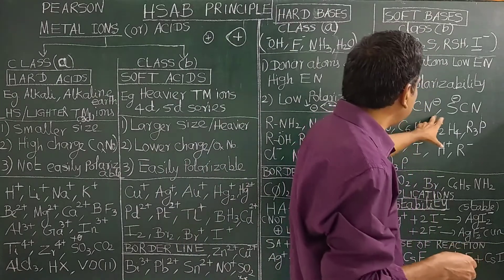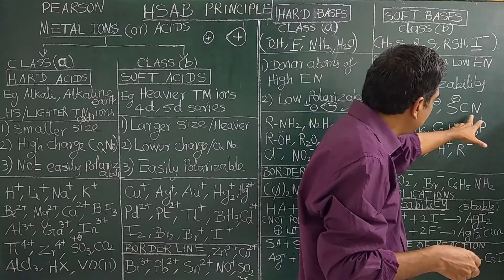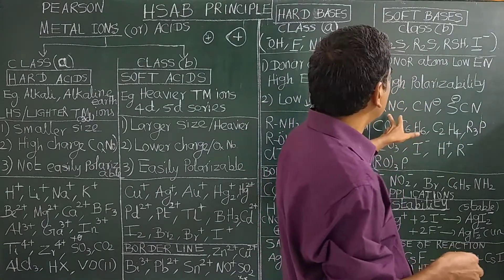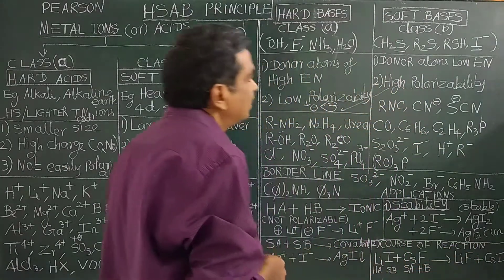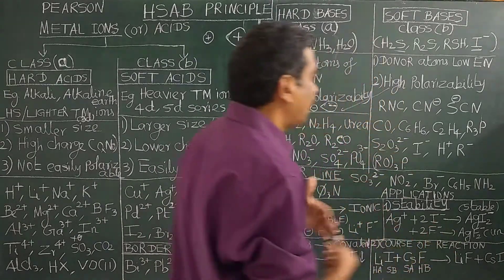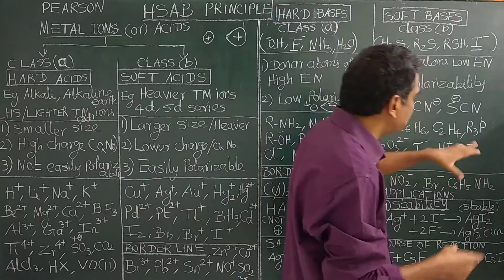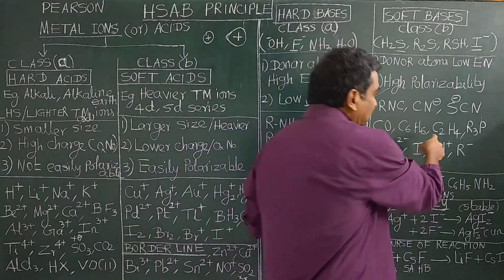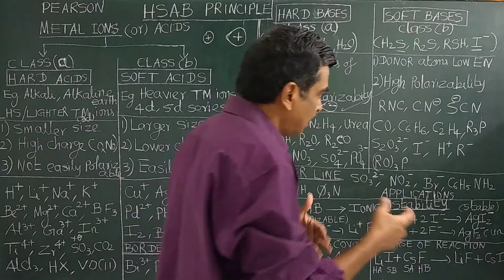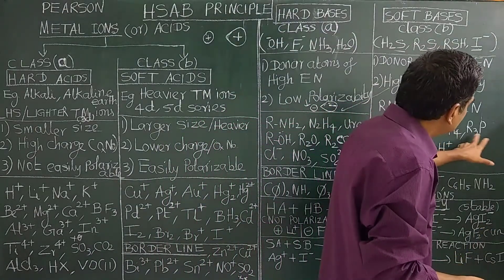Examples of soft bases include cyanide ion, isothiocyanate, carbon monoxide, benzene, and ethylene — these are electron donors. CO and ethylene (C2H4) can donate pi electrons.